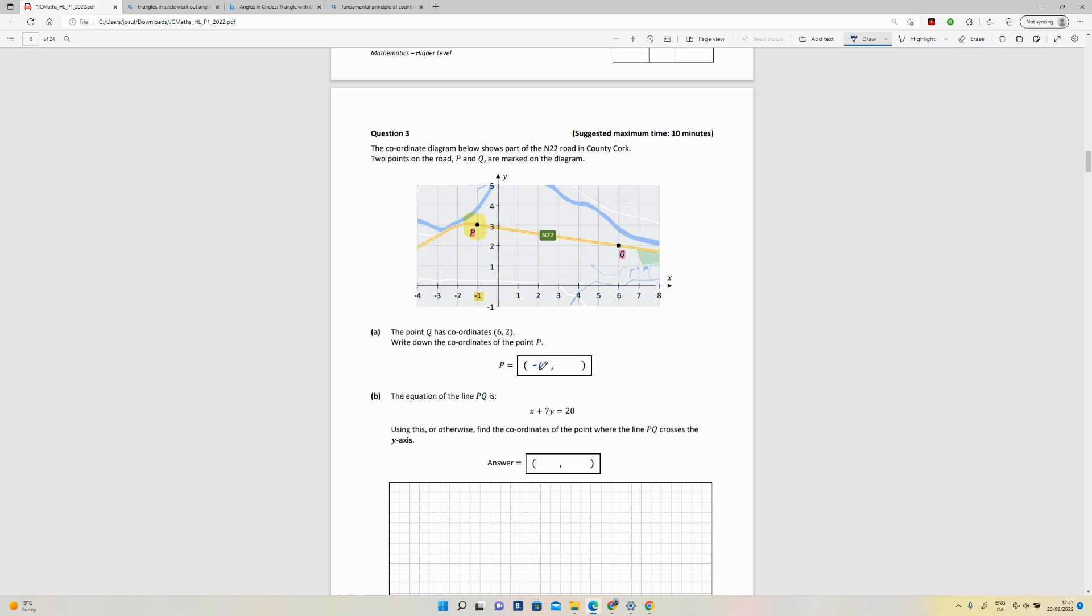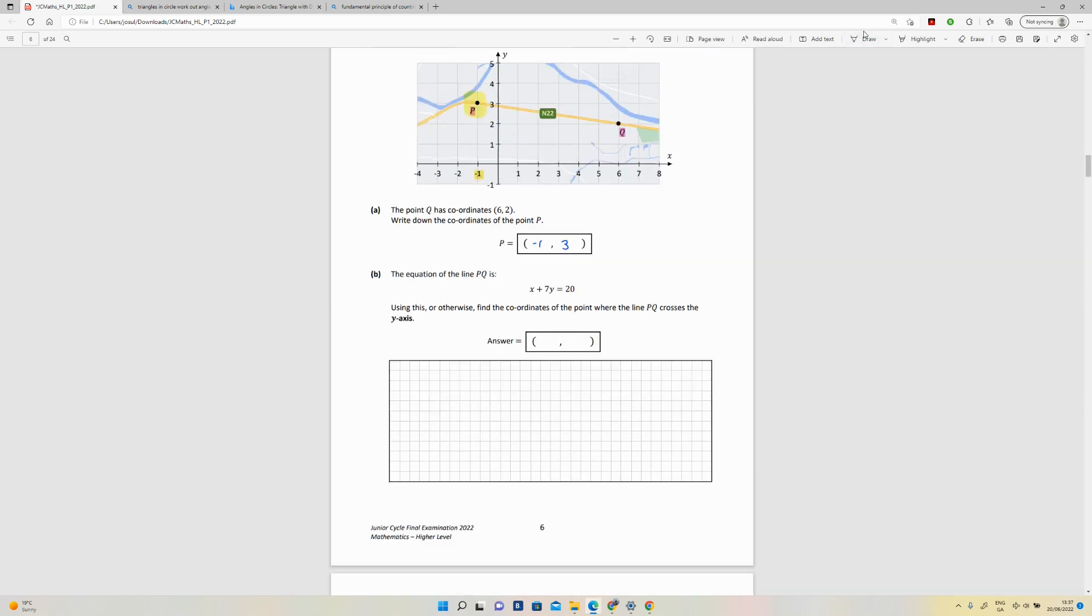Second part: The equation of the line PQ, which is the line we were just talking about, is as follows. Using this or otherwise, find coordinates at the point where PQ crosses the y-axis. So this is where, if you have that line there, let's use the road which is basically a straight line. Find the coordinates where PQ crosses. How do you do that?